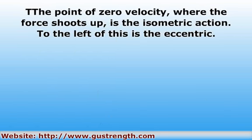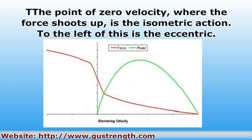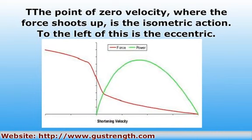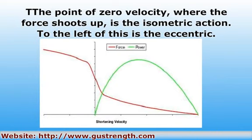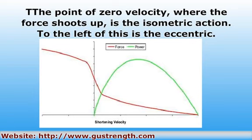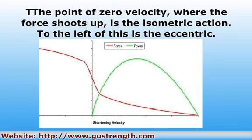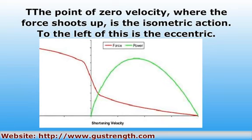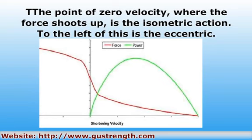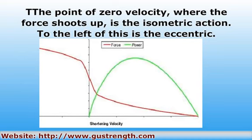To the left of the zero-velocity point, the force keeps going up. This is the eccentric action, where the muscle is lengthening under load. During this action is when muscles can generate the most tension. That's right — muscles can actually produce more force under eccentric conditions. This is why you can lower a heavier weight than you can raise on something like the bench press. This effect is not infinite, however.